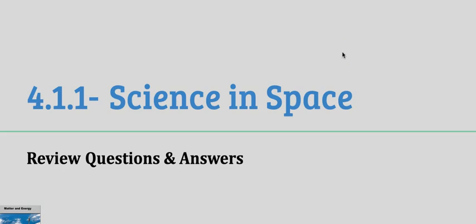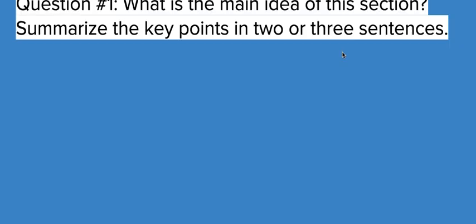Today we are going to review the questions for comprehension that are found at the end of lesson one, Science in Space, for the fourth grade unit Matter and Energy. Our first question is what is the main idea of this section? Summarize the key points in two or three sentences. This question is almost always going to be the first question you get in any of the units that you'll have in fourth or fifth grade.